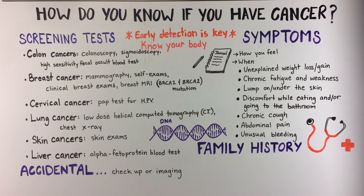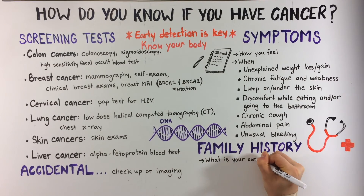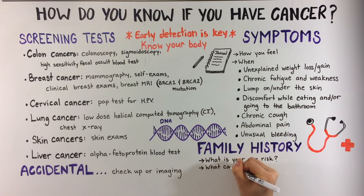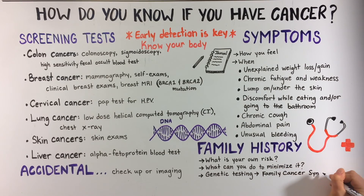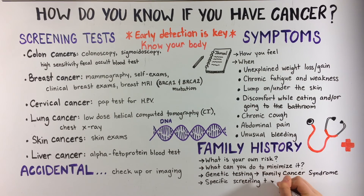As we mentioned earlier, genetics seems to play a role in the development of cancer. If several of your family members have had cancer, it may be worth seeing your doctor to discuss your own risk and what you can do to minimize it. Based on your family's health history, genetic testing may be recommended to rule out a family cancer syndrome. Your doctor may also recommend specific screening tests if you are at high risk for specific cancers.